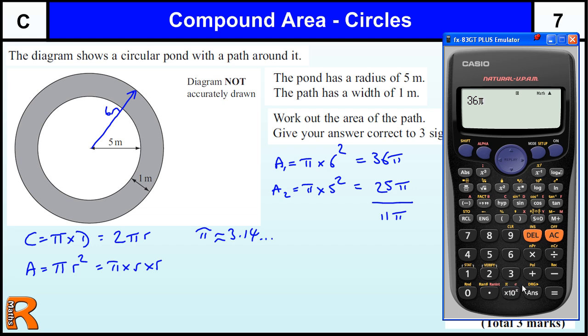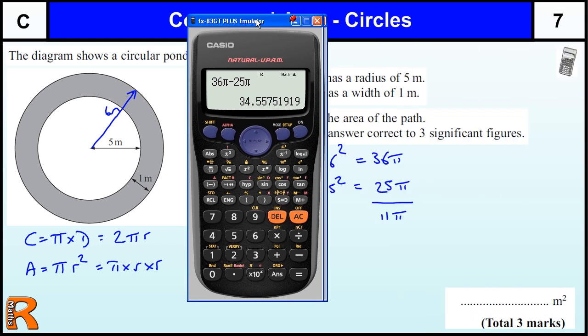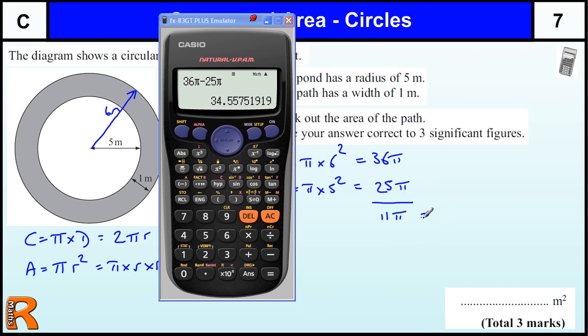It gives me that pi symbol, 36 pi, and I want to take away 25 pi. And that will give me the answer, 11 pi, which I had, but I need it as a decimal. So 34.55751919.